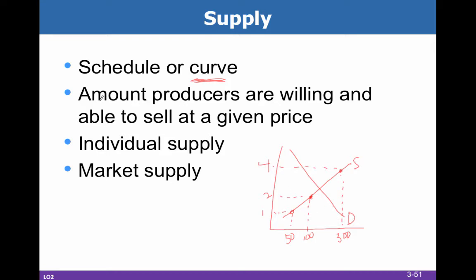What supply really is, is the amount producers are willing and able to sell at any given price. That goes down to the individual supply, which is what one particular ice cream salesman would supply. But then obviously you can imagine if ice cream cones are getting $4 each, then everybody is going to want to sell ice cream and there's going to be all kinds of players in that market — lots and lots of people.